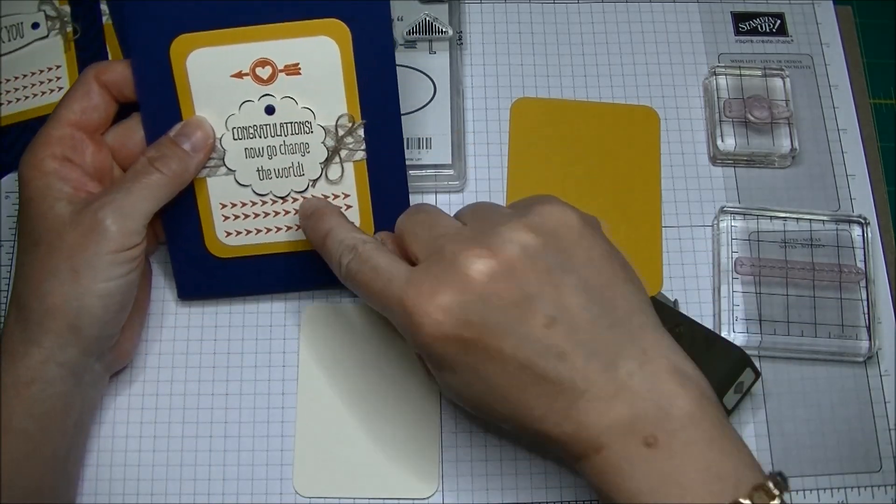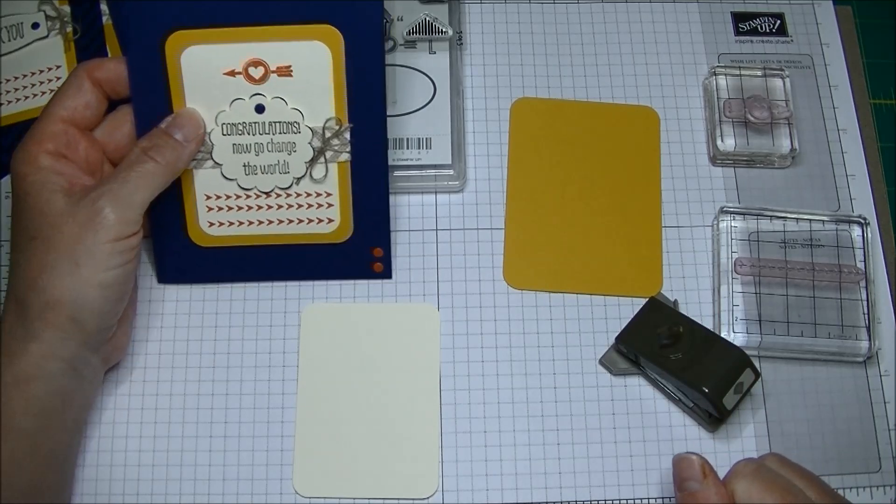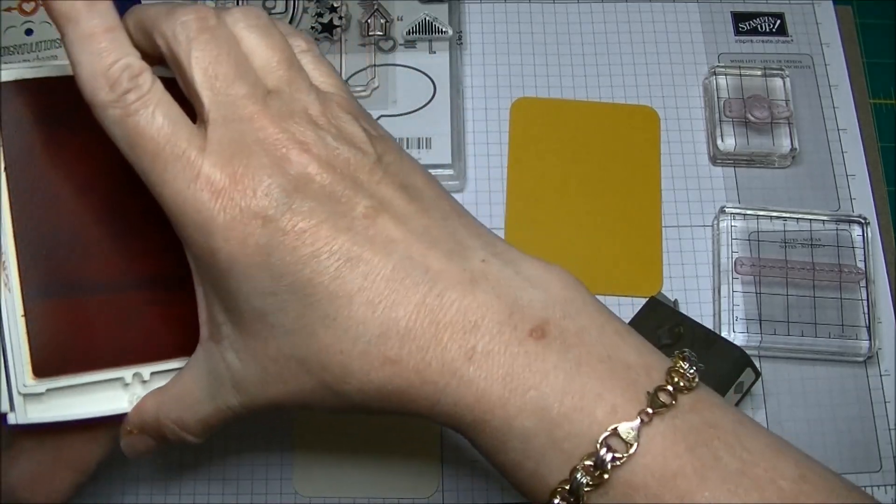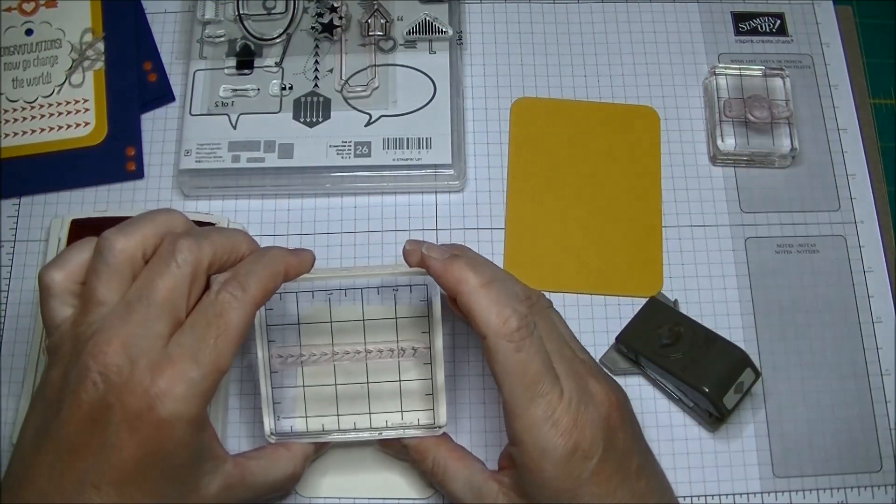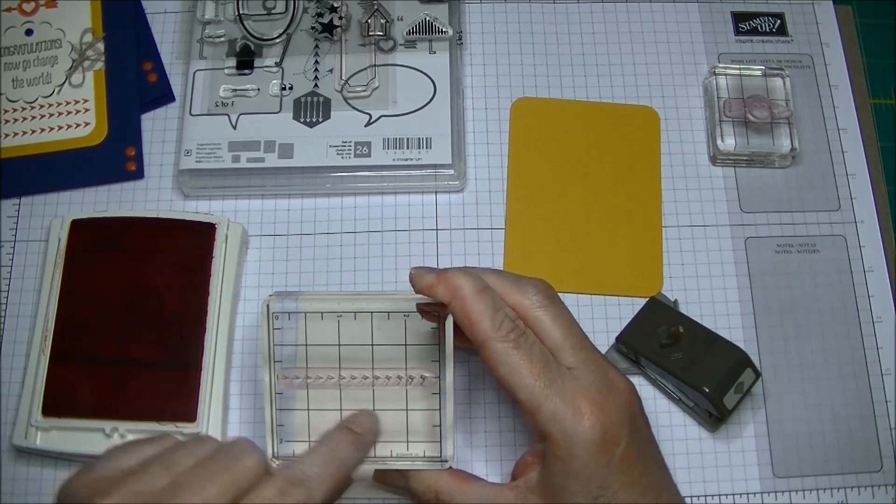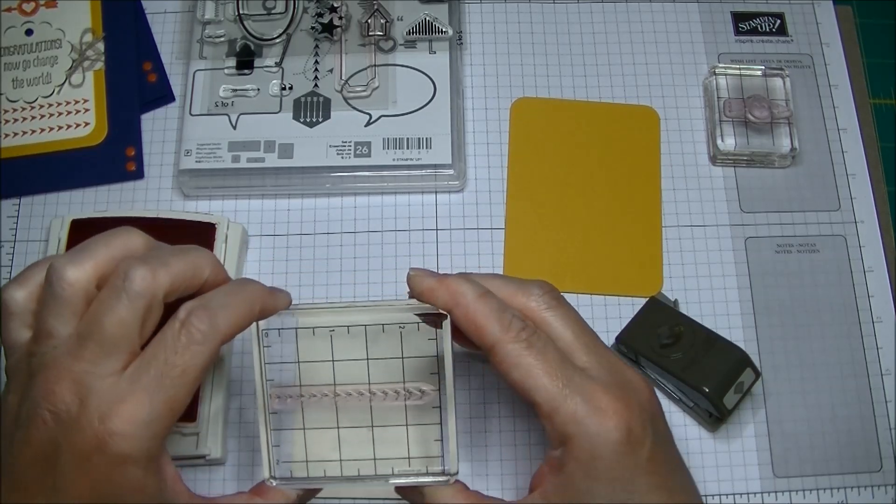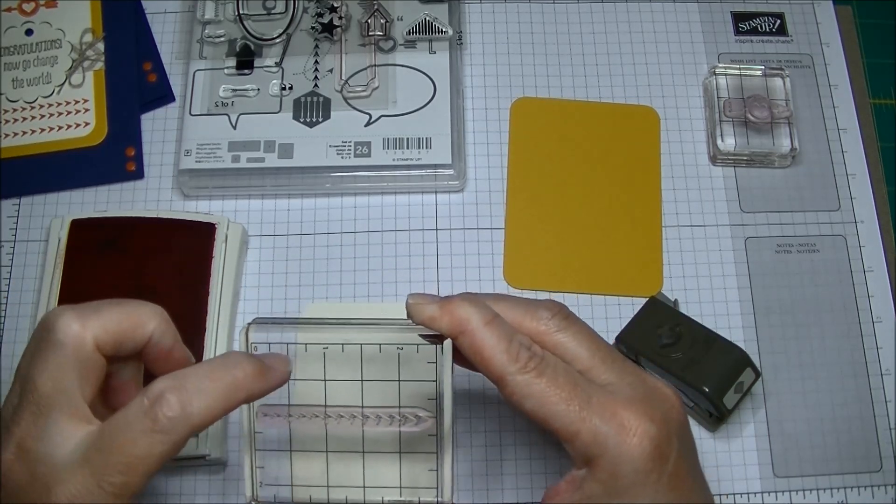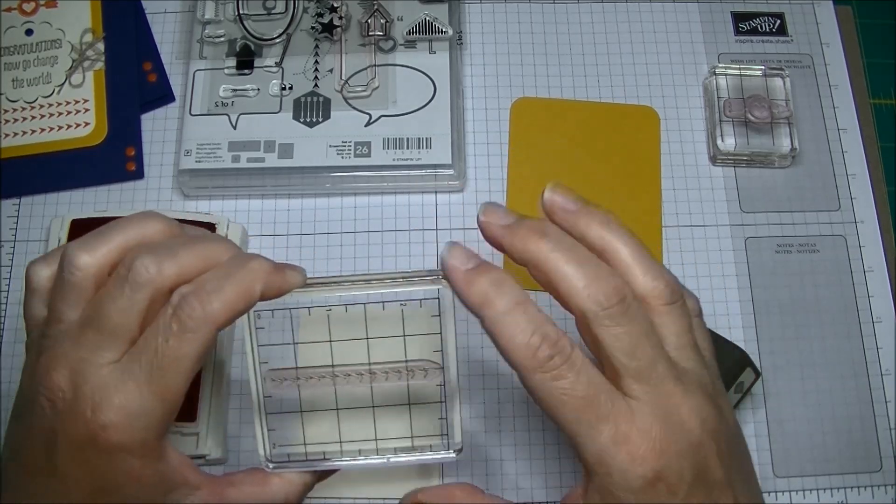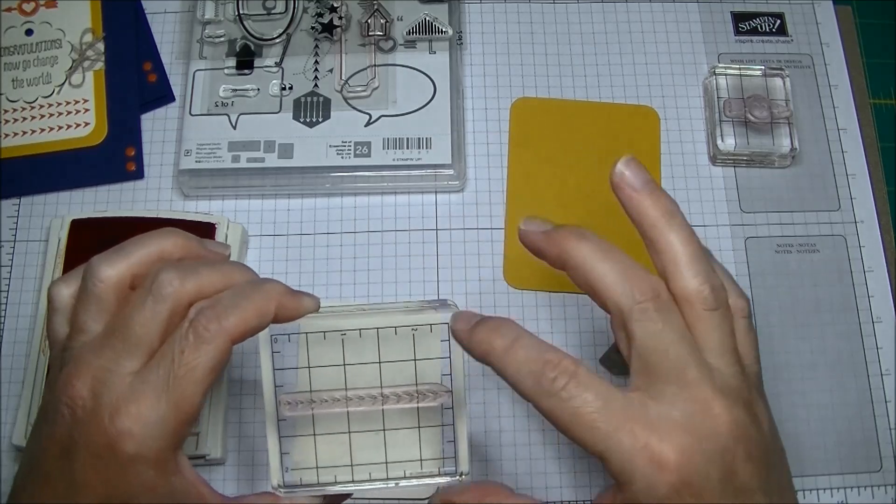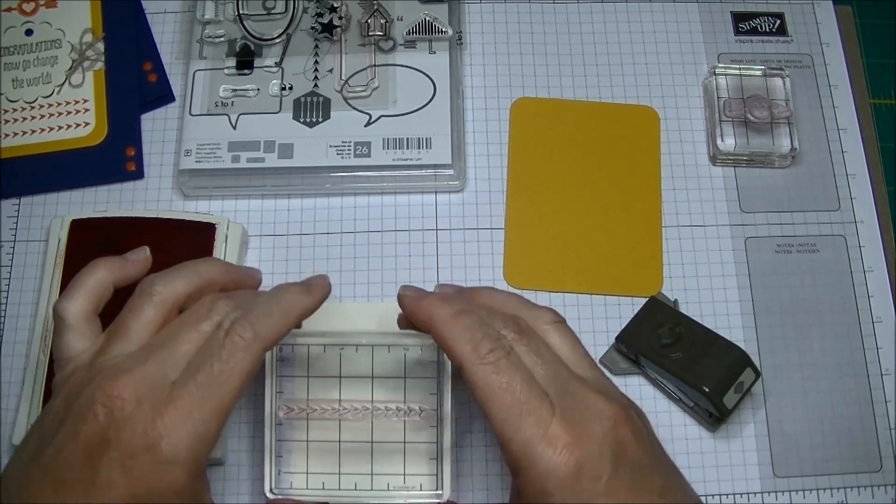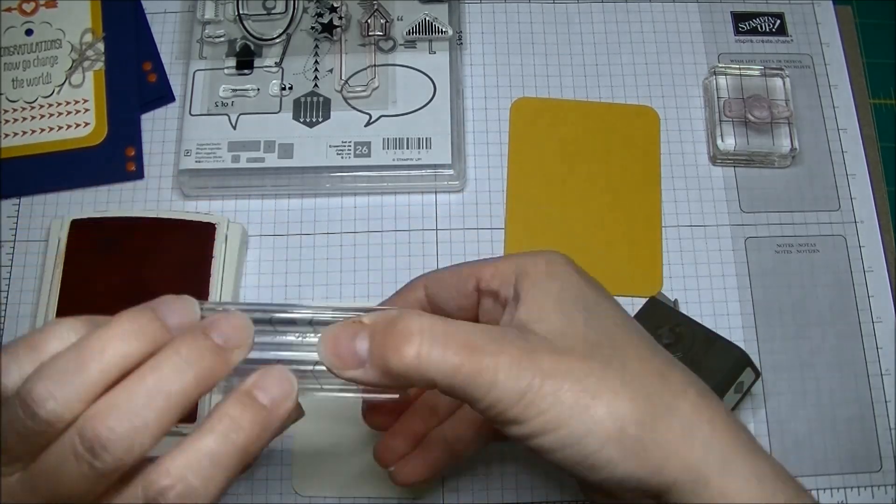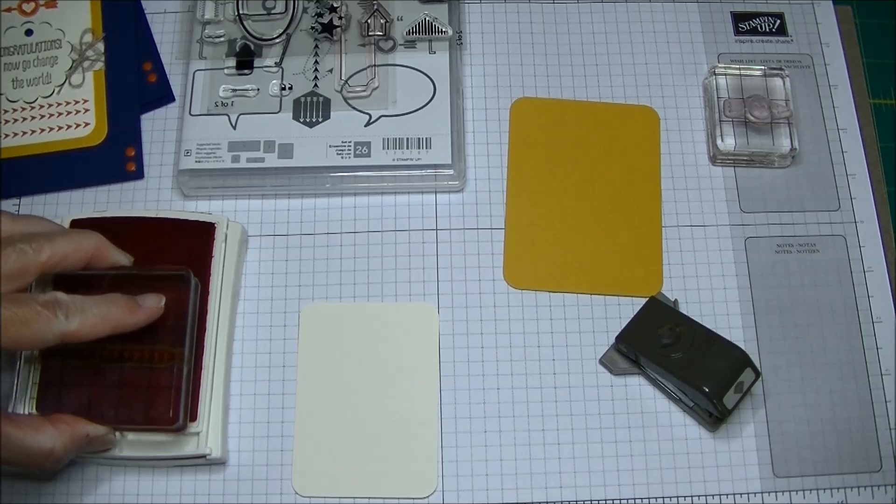The next thing I'm going to do is stamp my images in Tangerine Tango. I've already placed my Project Life stamp onto my clear block and I've lined it up. I use these vinyl clings which are on the retired list. I can't believe they're retiring them. I love these. When I first got my blocks I carefully lined them up so I know everything is really straight.